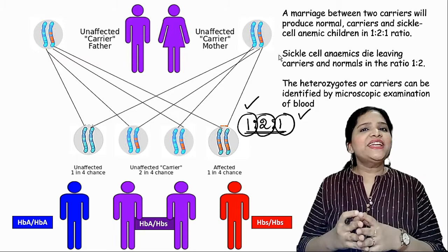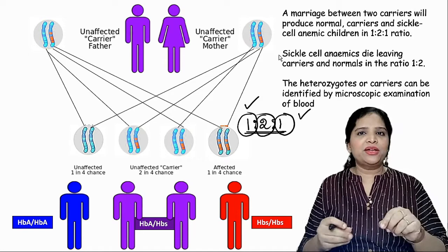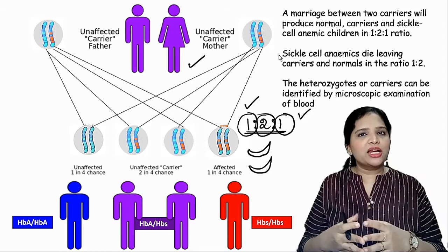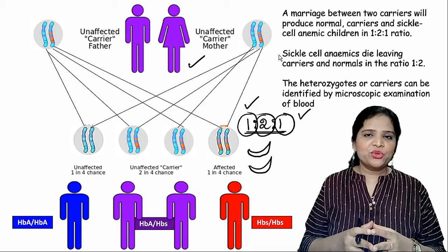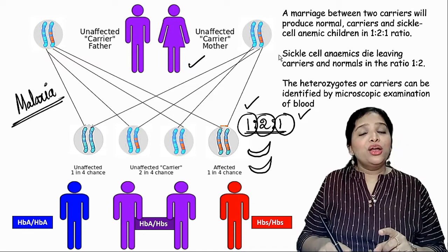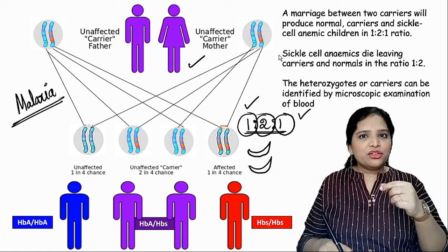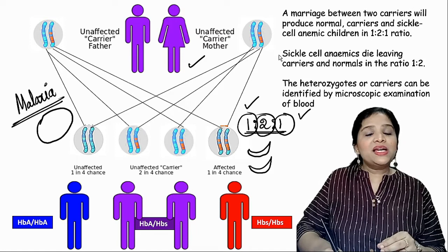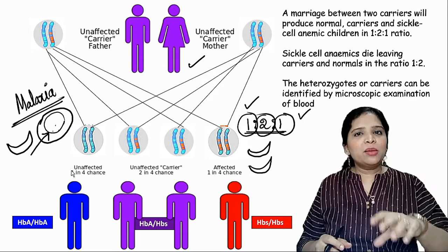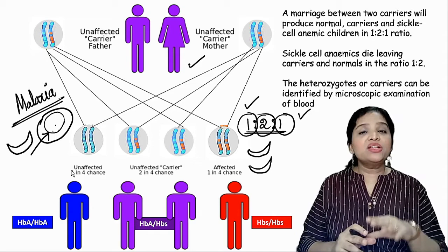We can detect the carrier stage through microscopic examination: take a drop of blood, make a smear, and observe the shape of the RBCs. If the RBCs are sickle-shaped, we conclude that person is a carrier. Another important point: patients with sickle cell anemia are resistant to malaria. Malaria is caused by the parasite Plasmodium, which multiplies inside RBCs. When RBCs are sickle-shaped, the malaria parasite cannot invade and continue its life cycle, so sickle cell anemia patients are resistant to malaria.